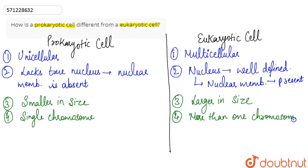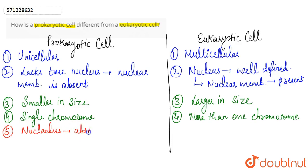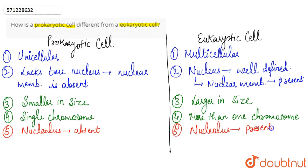The next point of difference is that the nucleolus is absent in the case of prokaryotic cells, whereas the nucleolus is present in the case of eukaryotic cells.